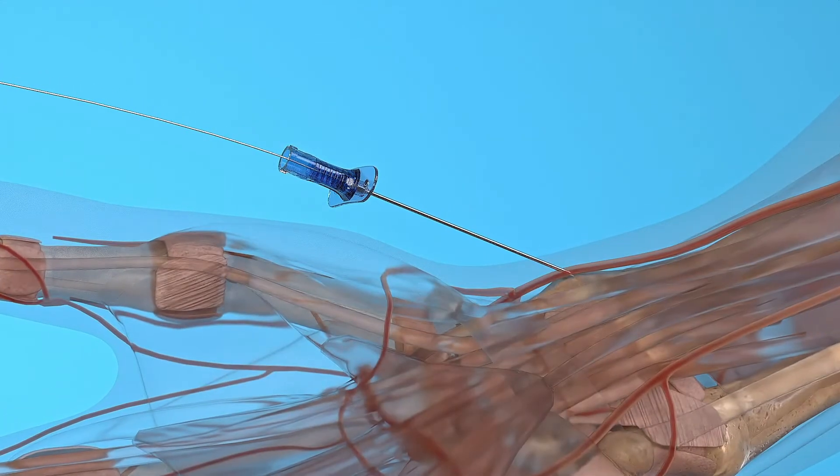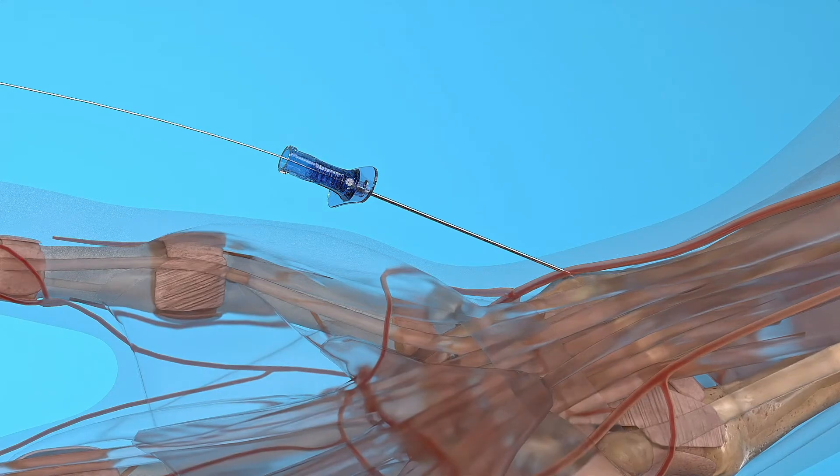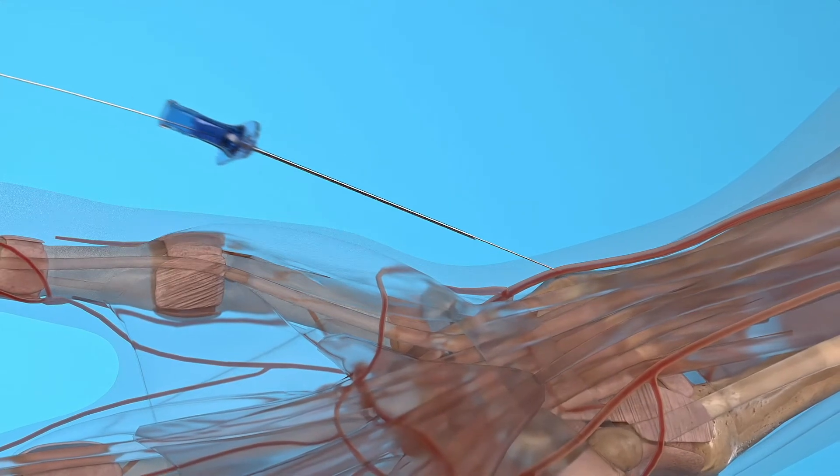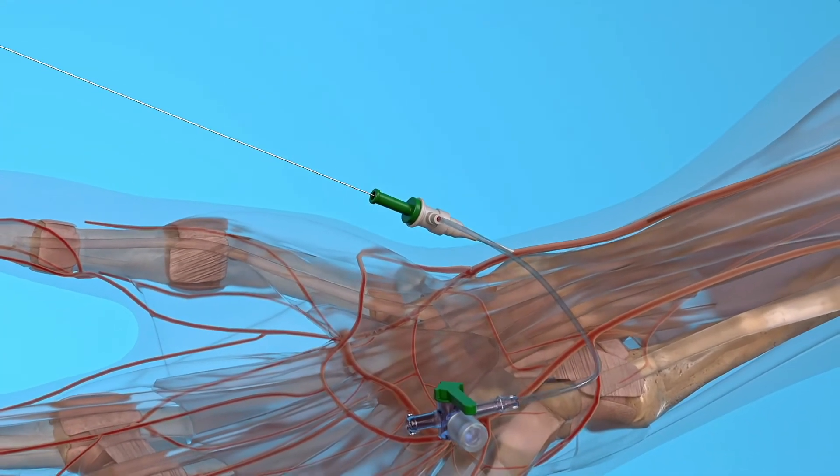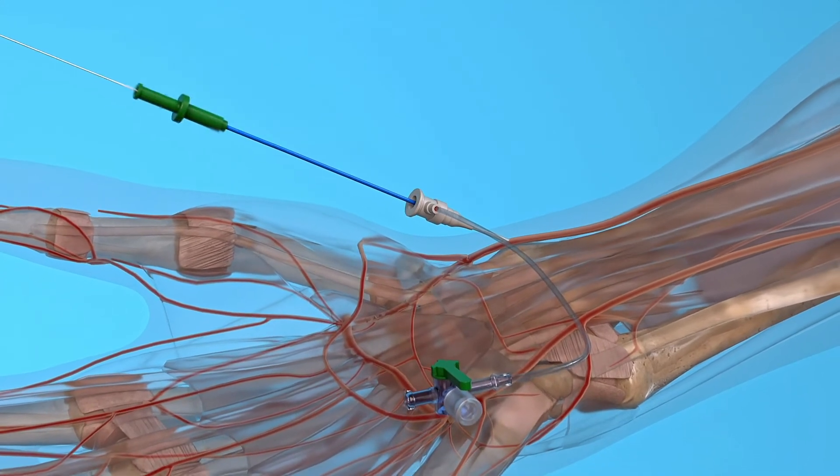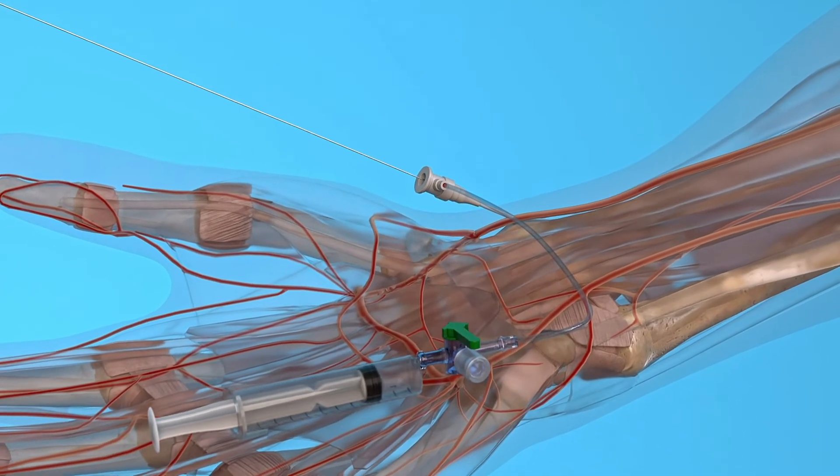After accessing the artery, a hydrophilic wire is introduced through the needle using the Seldinger technique. Once the needle is removed, an introducer sheath is placed into the artery. The wire is then removed.